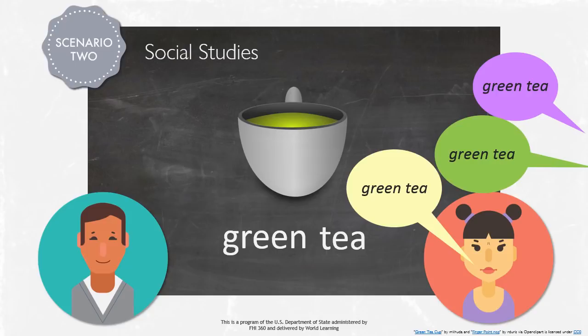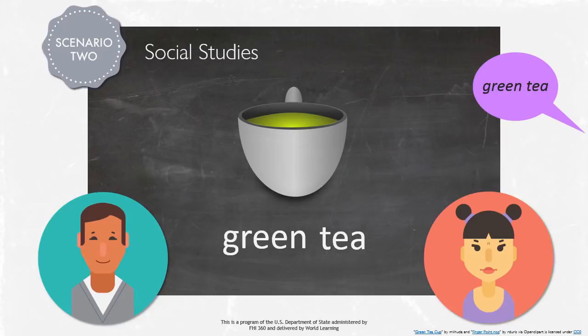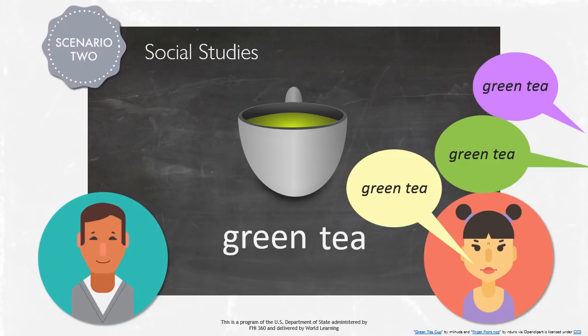He had the whole class repeat together, and then he invited a few individual students, including the original student who said that, to model the pronunciation. A couple of the students originally pronounced the words too quickly. He repeated green tea to them, emphasizing the length of the vowel sounds and making the same hand gesture again. Everyone was able to pronounce it well by the second or third try. When they did pronounce it well, Nooradin praised them with phrases like, That's right! and You've got it!